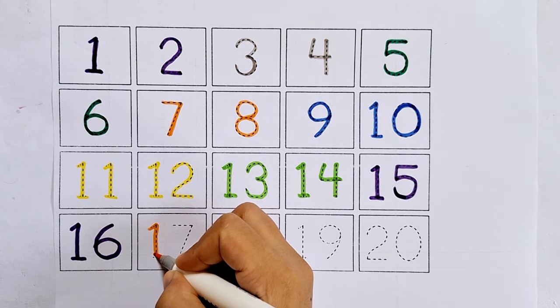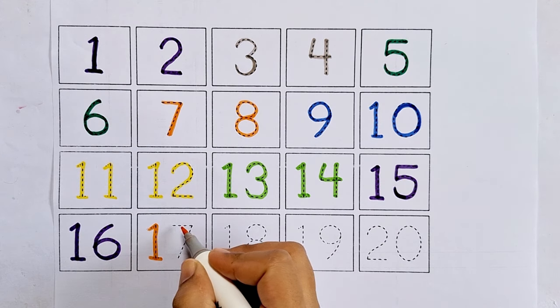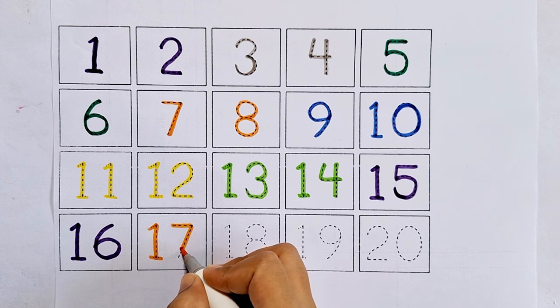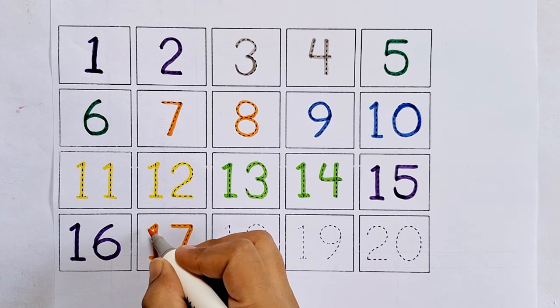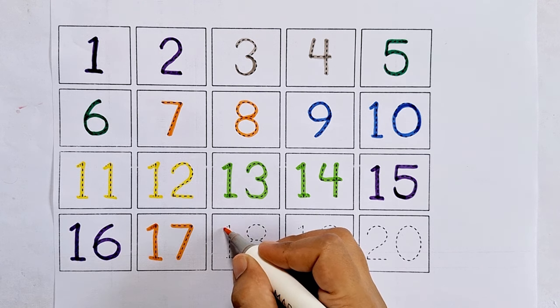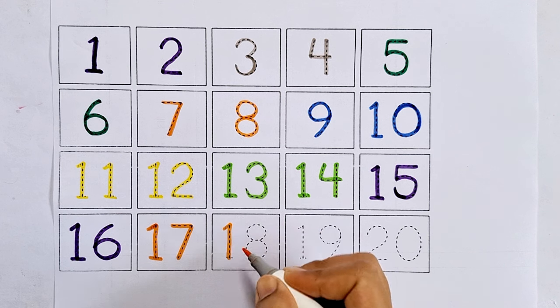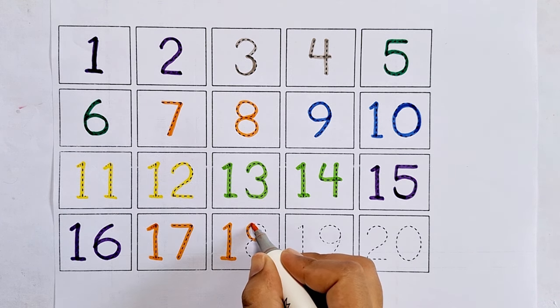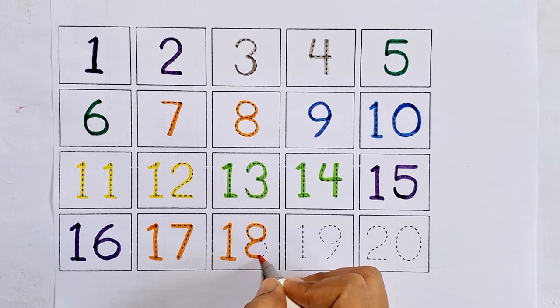Seventeen. After sixteen comes seventeen. Eighteen. One eight, eighteen. After seventeen comes eighteen.